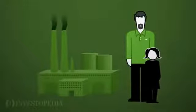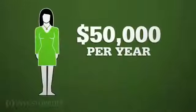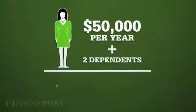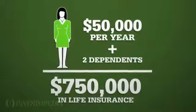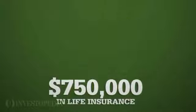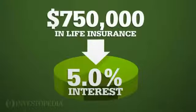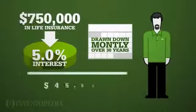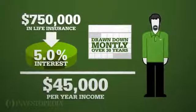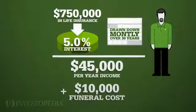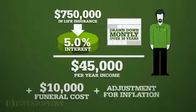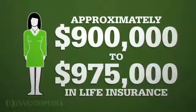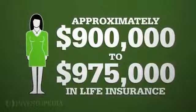Bob would then need to find a job and take care of his child. So to replace most of her income and leave her family provided for, Amy would need about $750,000 in life insurance. That money could be invested at around 5% and drawn down monthly over 30 years, so Bob could have about $45,000 per year income. Adding $10,000 for funeral costs and an adjustment for inflation, Amy needs approximately $900,000 to $975,000 of insurance on herself.